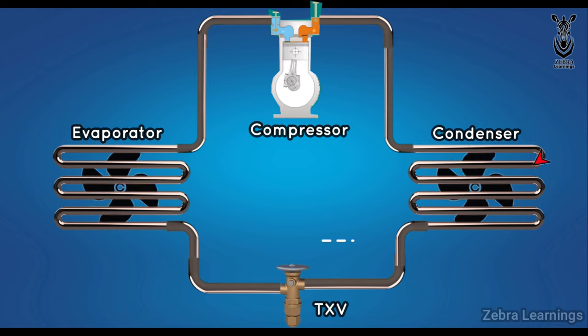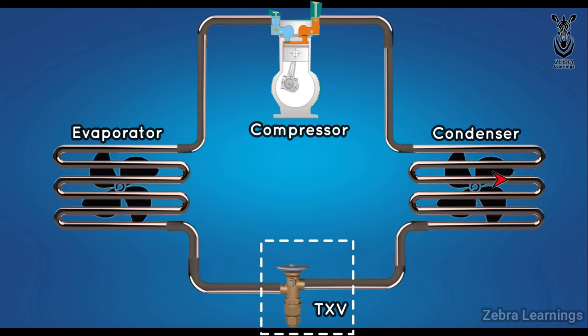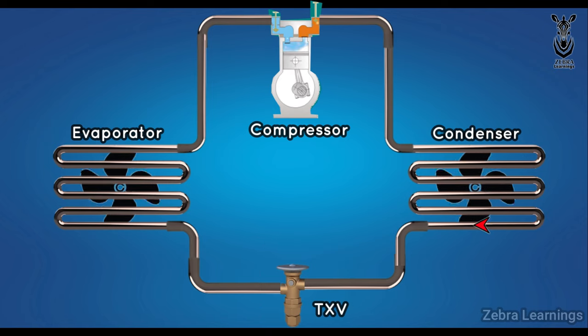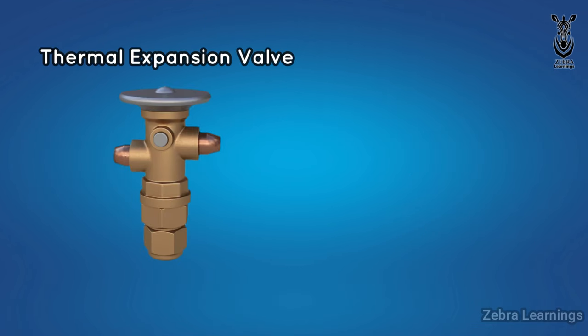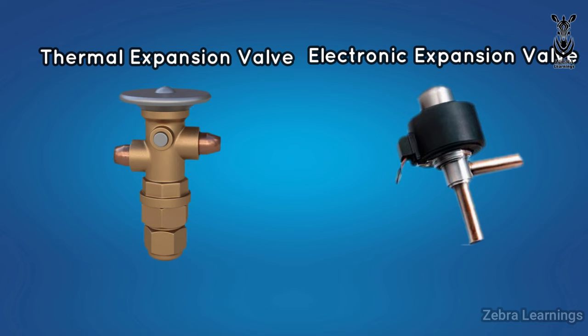Next, the refrigerant goes to the expansion valve. Although there are many types of expansion valves, thermal expansion valve is mostly used in many places. The most advanced of these is the electronic expansion valve.